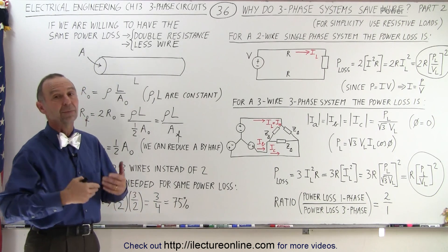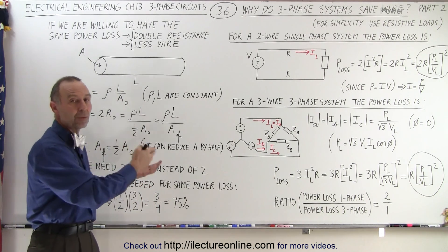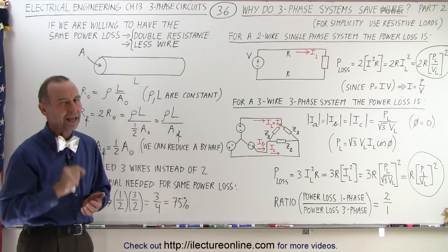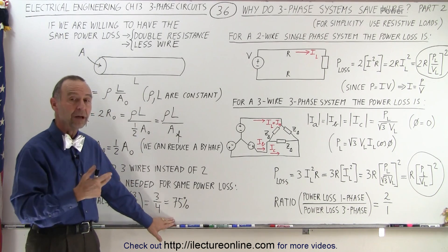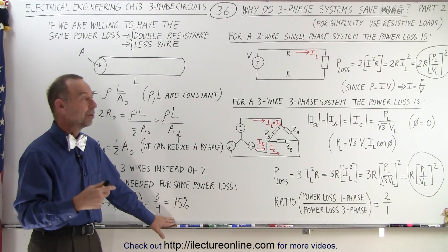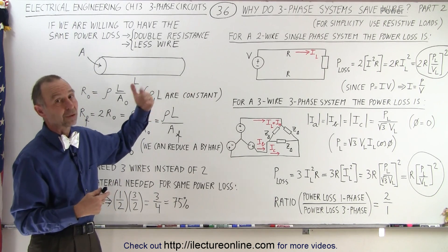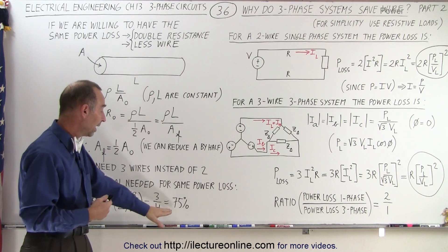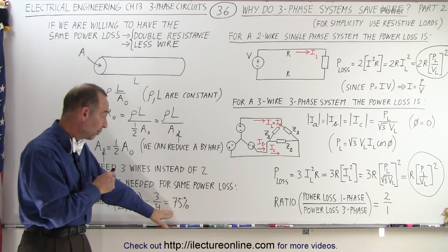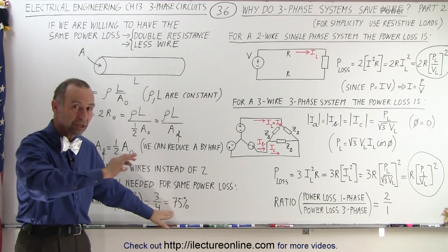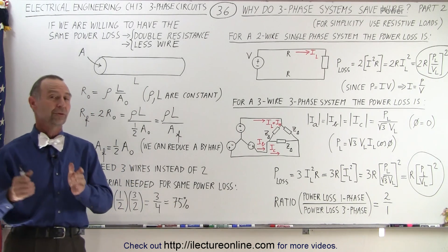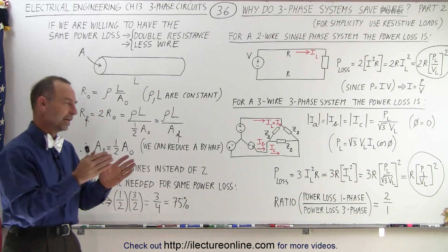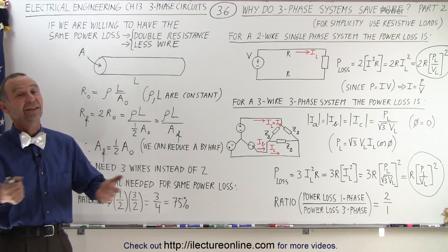Or we can have the same amount of material and save in power loss cost. We'll try that on the next video to show if you want to save on power loss, how much can we save? Because based on the fact we need three wires instead of two wires, but at least if we want to save on the material alone and you don't care about power loss, then 75% is what you need on the material for a three-phase system versus a one-phase system. And that's how it goes.